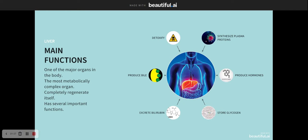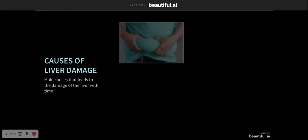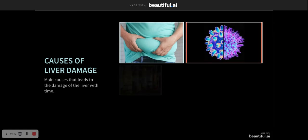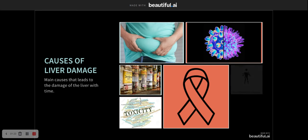Main causes that lead to liver damage over time are obesity, hepatitis B or C or other viruses, alcohol, toxins, cancer, autoimmune diseases which attack the body itself, and drugs such as antibiotics and anticonvulsants which are taken for epilepsy.